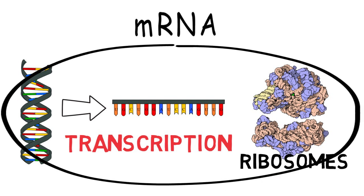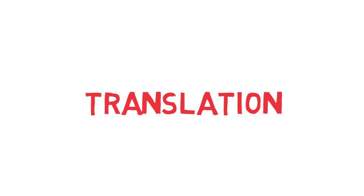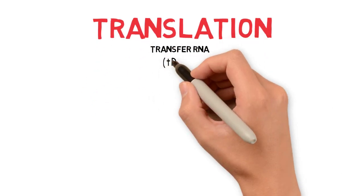The second phase of protein synthesis, called translation, also makes use of a specific type of RNA, called transfer RNA, or tRNA.